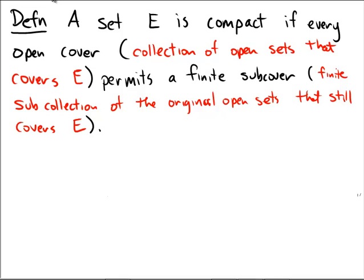A set E is said to be compact if every open cover, that is a collection of open sets that covers E, permits a finite sub-cover, a finite sub-collection of that original set, a set of sets, that still covers E.